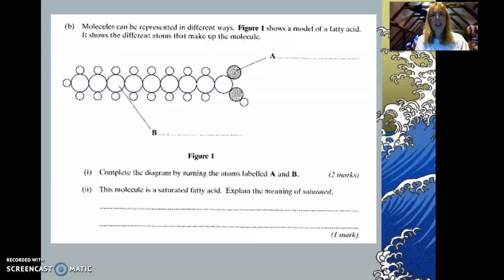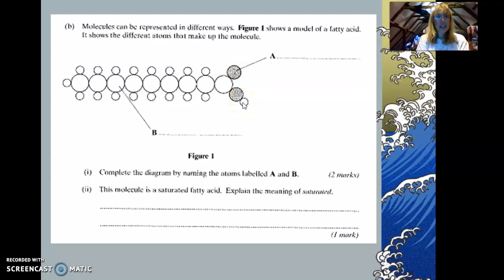Here's a question to try. Molecules can be represented in different ways. Figure one shows a molecule of fatty acid, showing the different atoms that make up the molecule. Complete the diagram by naming the atoms labeled A and B — because there are only two of the dark ones at the end, think about what element that could be. Also answer: this molecule is a saturated fatty acid — explain the meaning of the word 'saturated.' Pause the video, discuss it with your neighbor, and then check in.